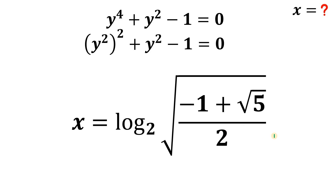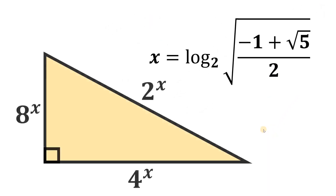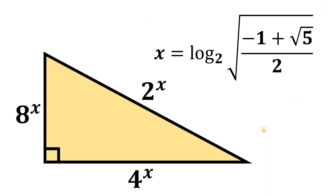This is the value of x that satisfies this equation, and this is our answer. Therefore, given this right triangle, the value of x that makes this a real right triangle equals logarithm base 2 of square root of negative 1 plus square root of 5, all over 2. And as always, we are done.